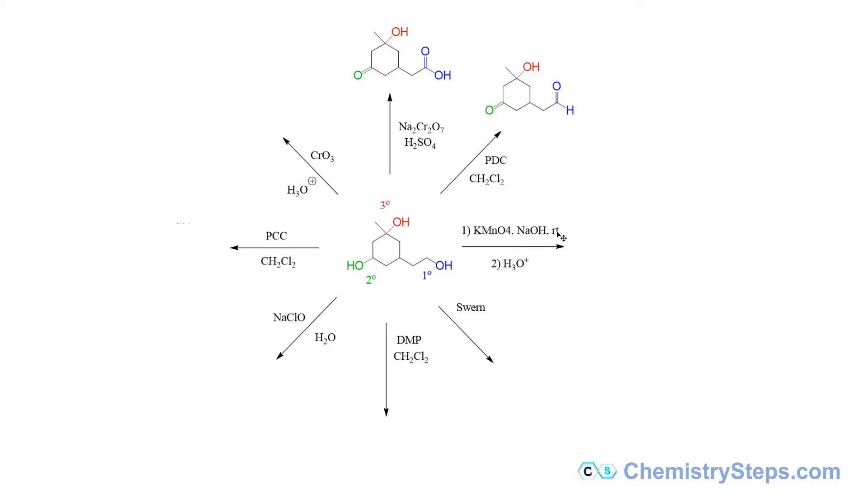Potassium permanganate, that's another strong oxidizing agent, so very much the same story as we have here with the sodium dichromate. It's going to oxidize this into carboxylic acid, secondary goes into ketone, and we do not touch the tertiary alcohol.